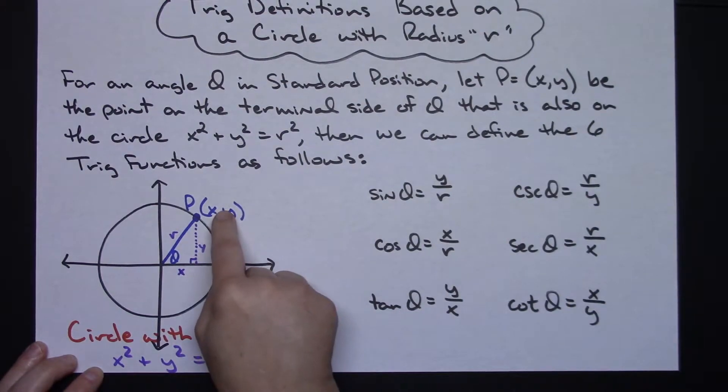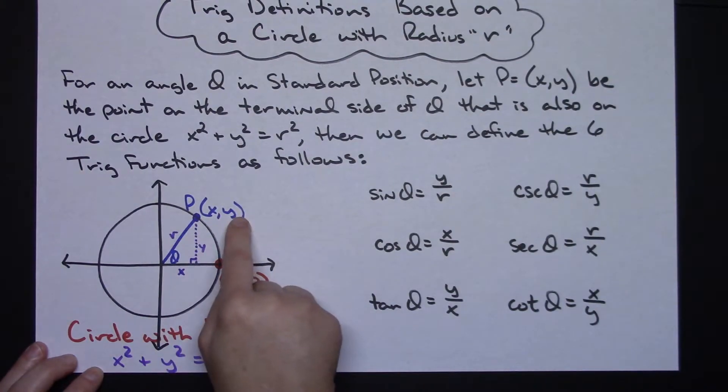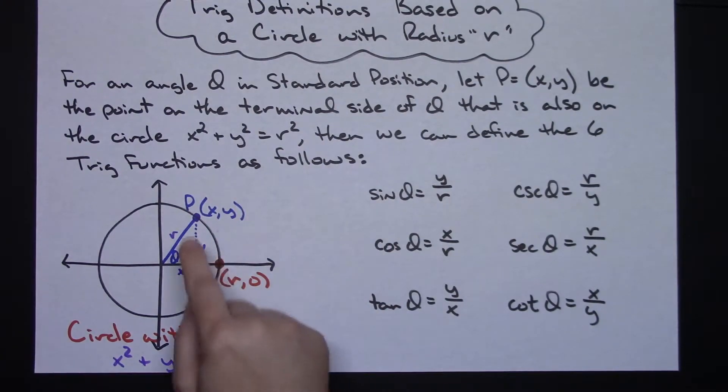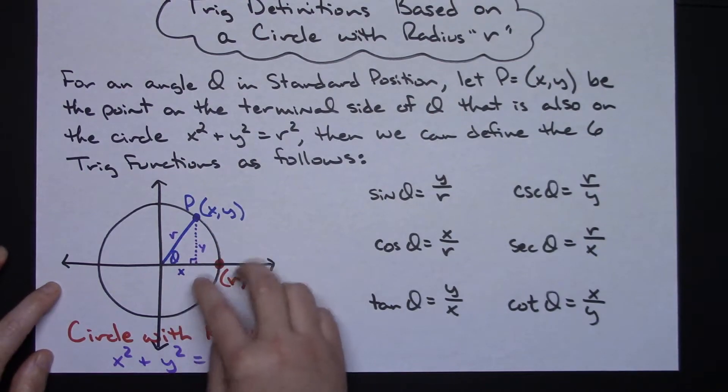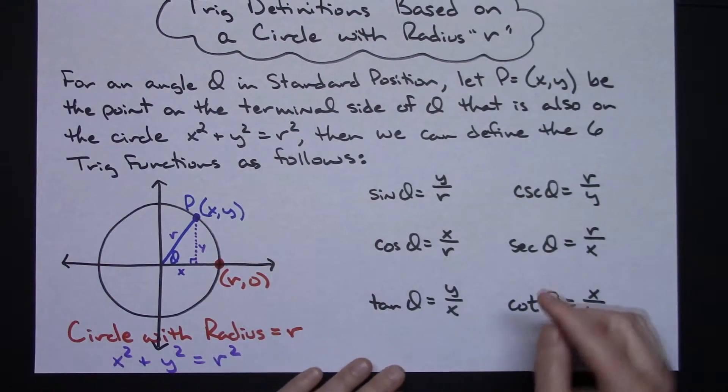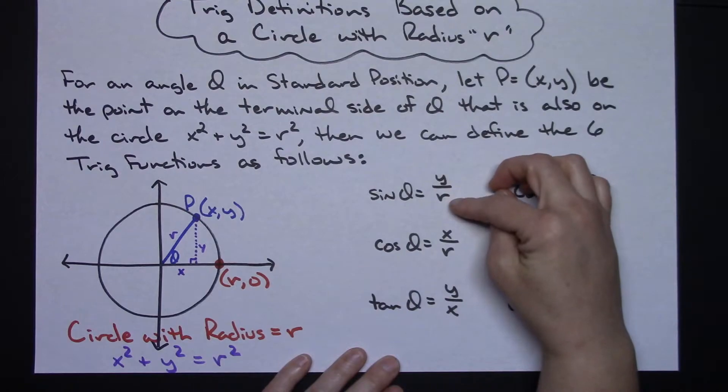So if I know the point, I can find the radius of that circle. If I know the radius of the circle and one of those coordinates, then I could find the other coordinate of that point. So these three values will be key, knowing the two points in the ordered pair and then knowing the radius as well. And if we know those three values, we can define sine of theta as y over r.